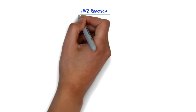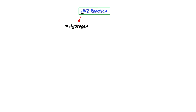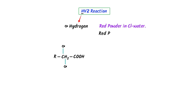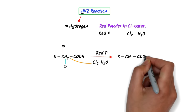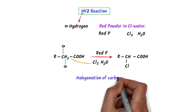Let me teach you the HVZ reaction. H in HVZ always reminds me that alpha hydrogen is displaced. I write a carboxylic acid group COOH with one carbon and one alkyl attached — the adjacent (second) carbon is the alpha carbon and its hydrogen is the alpha hydrogen. Secondly, I write red phosphorus and chlorine gas plus water as reactants. The chlorine displaces one alpha hydrogen, and I write chlorine attached to the alpha carbon. This reaction is used for halogenation of carboxylic acid.